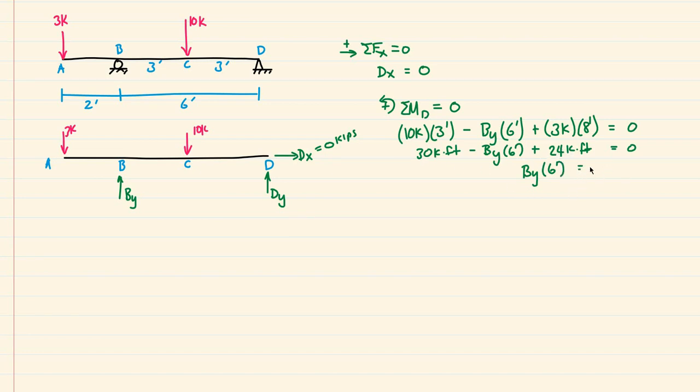And if I divide both sides by 6, I get B-Y is equal to 9 kips. There you go. So that is our vertical reaction B-Y, which is 9 kips.